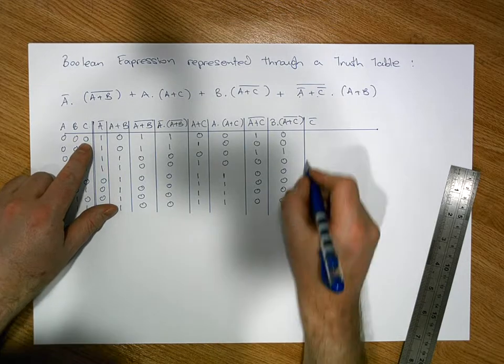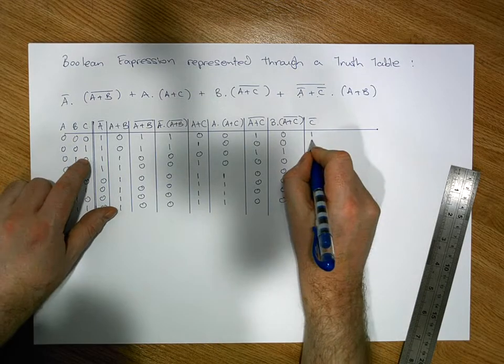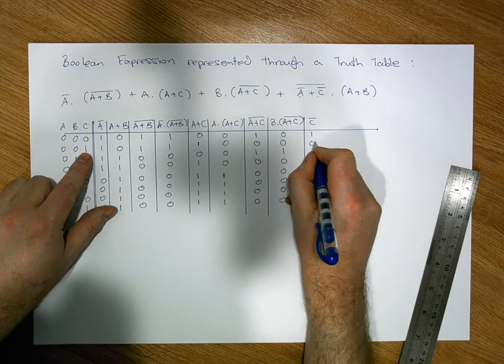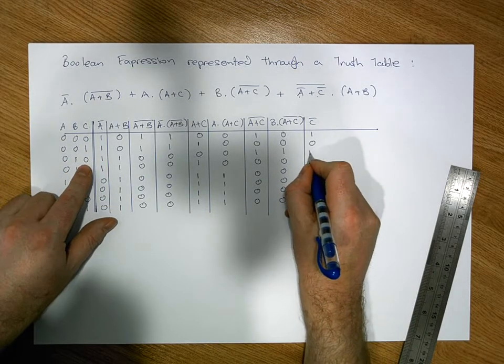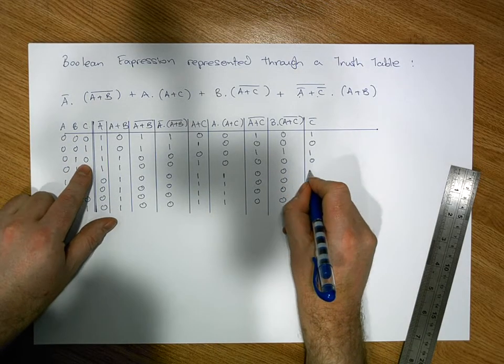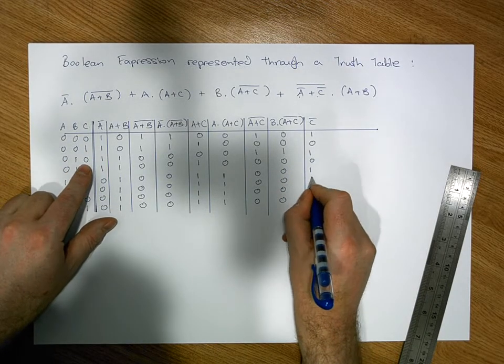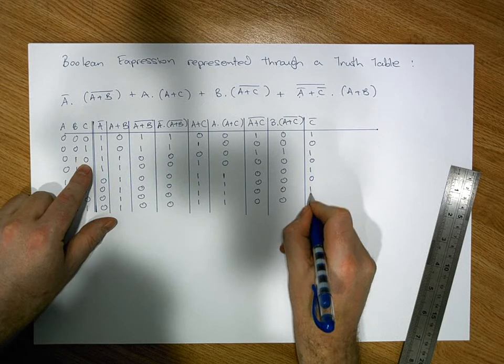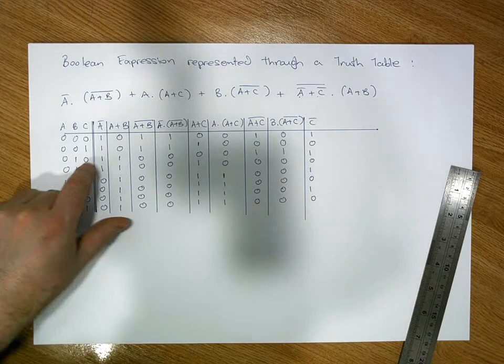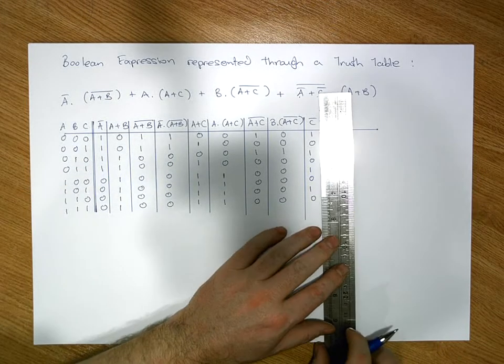Inverting the C column: zero goes to one, one goes to zero, one, zero, one, zero, one, zero. That gives us our C-bar column.